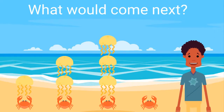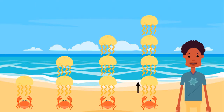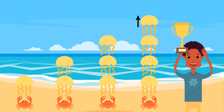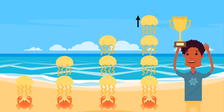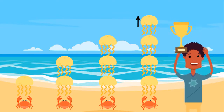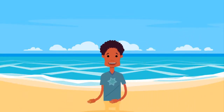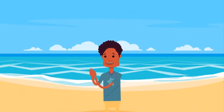What would come next in this growing pattern — one jellyfish, three jellyfish, or four jellyfish? Right! The next part of the growing pattern would have four jellyfish on top of the crab.